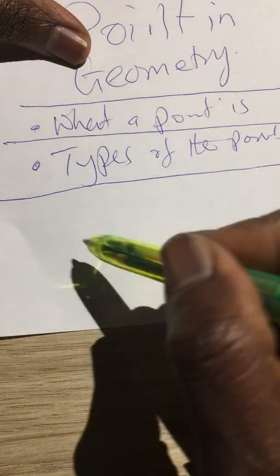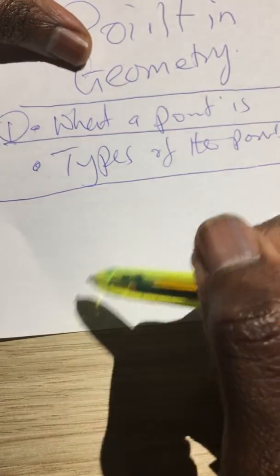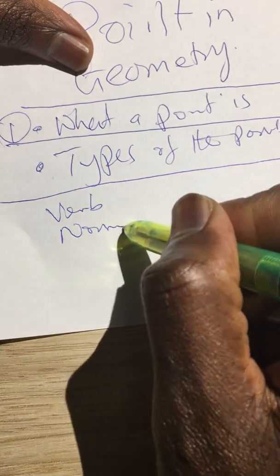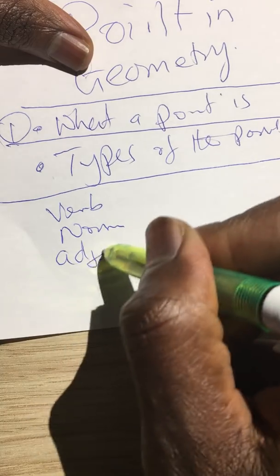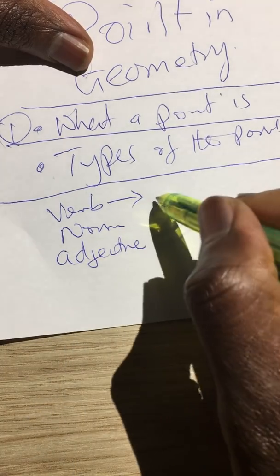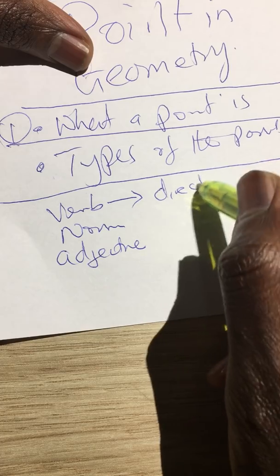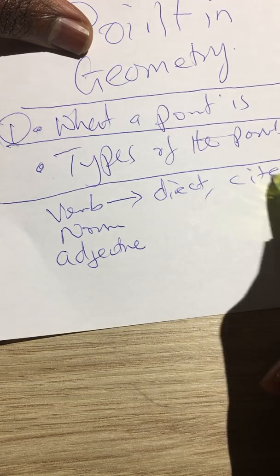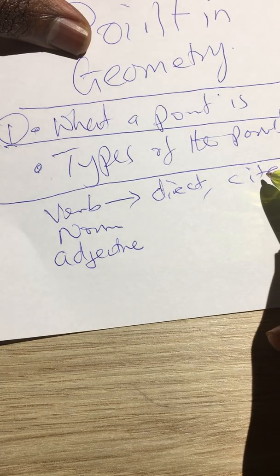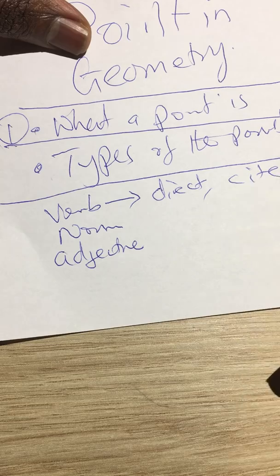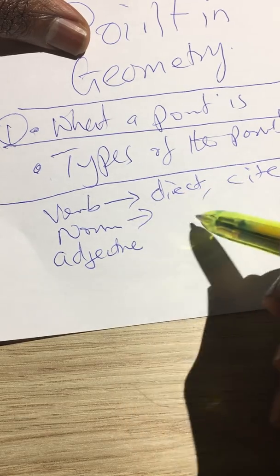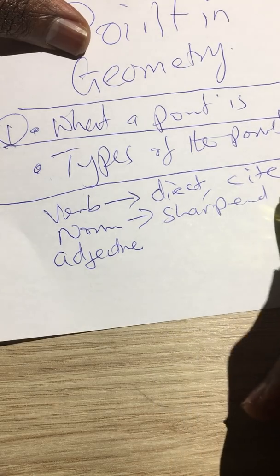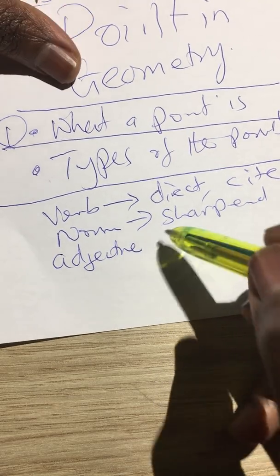Okay, let us start with number one. What is a point? The point can be looked at as a verb, noun, or adjective. As a verb, you can look at the point as directing someone to go and do something or citing evidence about something. In terms of a noun, you can look at the point as the sharp end of an object. And in terms of adjective, you look at the point as a description of a place.